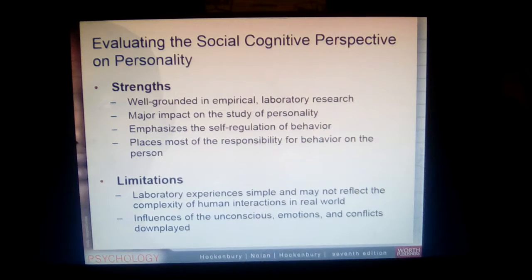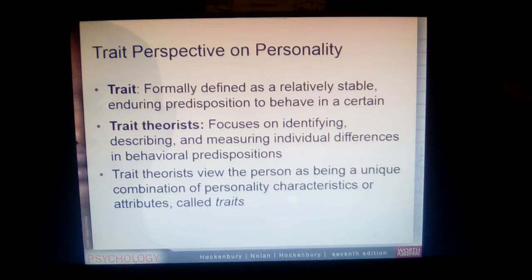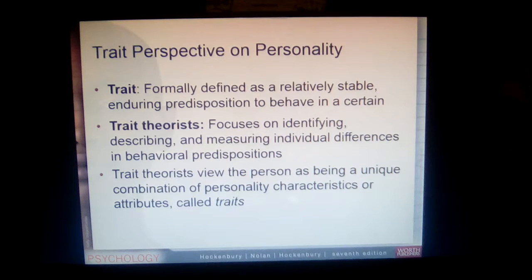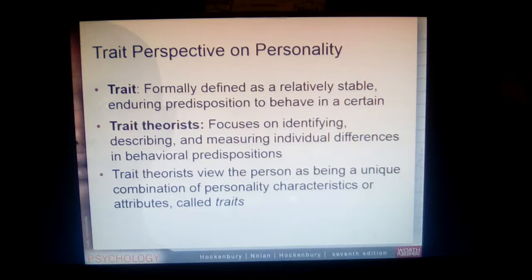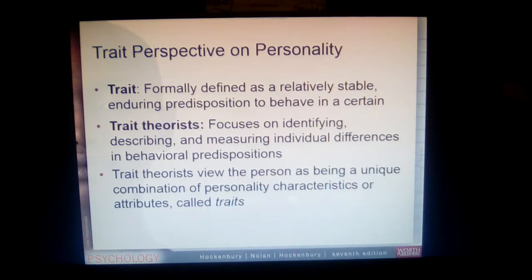The last theory we'll discuss is the trait perspective. A trait is a relatively stable and enduring predisposition to behave a certain way. We have about 4,000 English words to describe specific personality traits, and trait theorists are interested in identifying, describing, and measuring individual differences in behavioral predispositions — seeing us as a unique combination of traits, characteristics, or attributes.